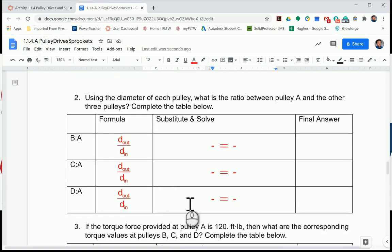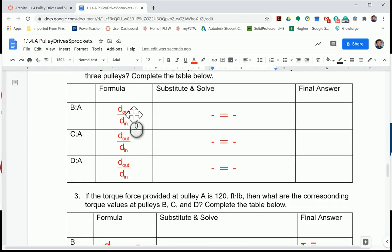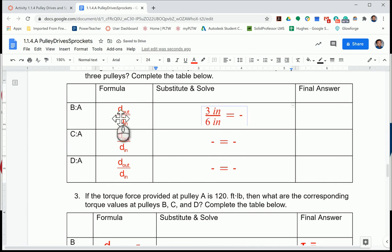Number two: using the diameter of each pulley in that figure, what is the ratio between pulley A and the other three pulleys? Complete the table below. For B to A, we're looking at the diameter out over the diameter in. For B, we have a three-inch diameter pulley. A, we have a six-inch diameter pulley. So the output is going to be B. Here we had a three-inch diameter pulley, and then we have six inches for the A-size pulley. This other side here is to reduce our fraction. So here we get a one, and the units will cancel each other. Here you're going to get a one over two scenario. The final answer is expressed in a colon format, as a one to two ratio in that particular case.